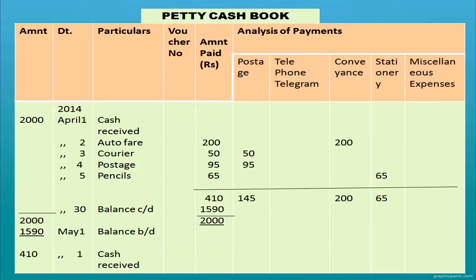To balance: 2,000 minus 410 gives a balance of 1,590. On the last date of the month, 'Balance Carried Down' 1,590 is written. In the beginning of the next month — May 1st — 'Balance Brought Down' 1,590 is entered. The petty cashier then receives 410 — whatever he spent — from the main cashier. That 410 is recorded as cash received on May 1st.